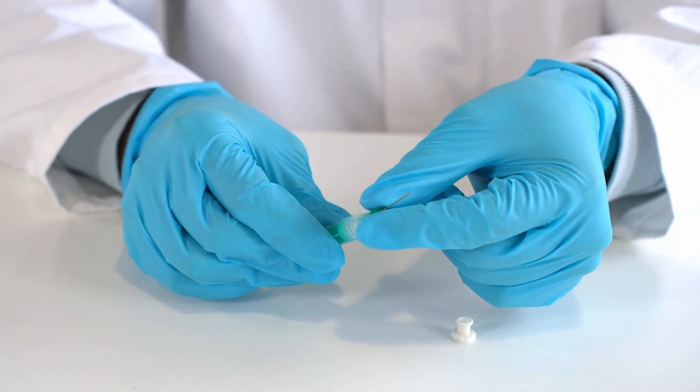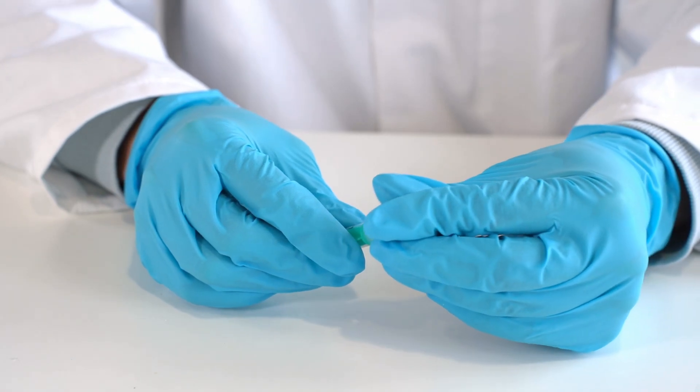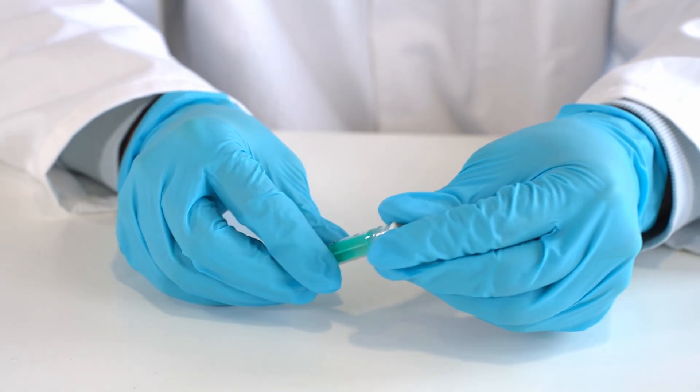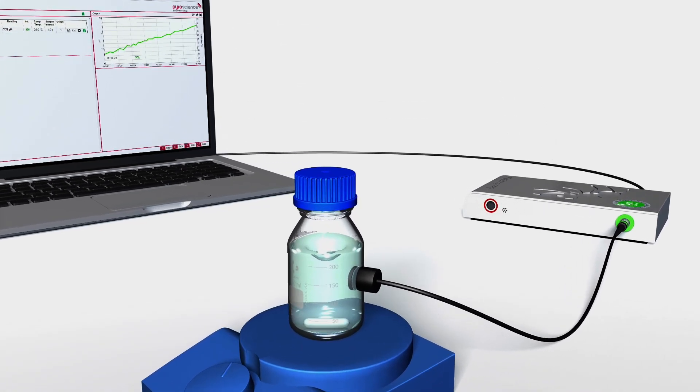Remove the needle from the syringe and deposit properly in a cannula disposal box. For short-term storage close the syringe with the screw cap to keep the silicone glue fresh for a few weeks. The readout fiber can now be connected and measurement started.